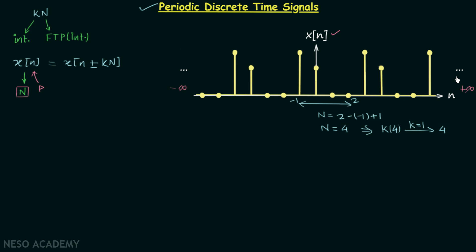If the repetition is not from minus infinity to plus infinity, you will not get the same signal. Therefore, for all periodic signals, a particular structure must be repeated from minus infinity to plus infinity — this condition is very important. Now we move on to the second part of this lecture and discuss composite discrete time signals.